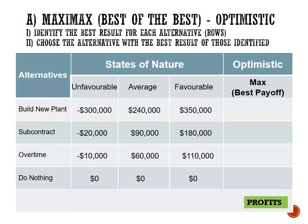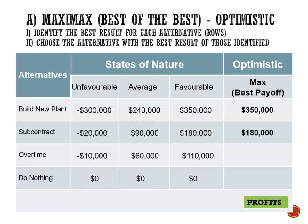Step one — identify the best result for each alternative. For building a new plant: options are a loss of $300K, a profit of $240K, or a profit of $350K — best is $350K. For subcontract: a $20K loss, $90K profit, or $180K profit — best is $180K. For overtime: a $10K loss, $60K profit, or $110K profit — best is $110K. For do nothing: zero across the board — best outcome is zero.